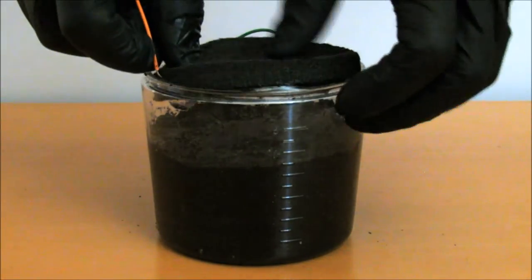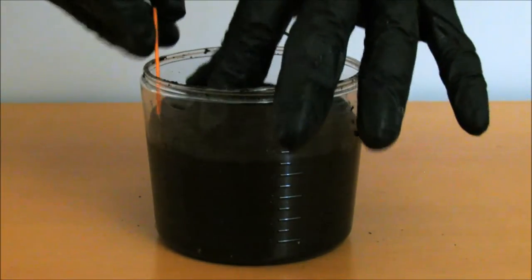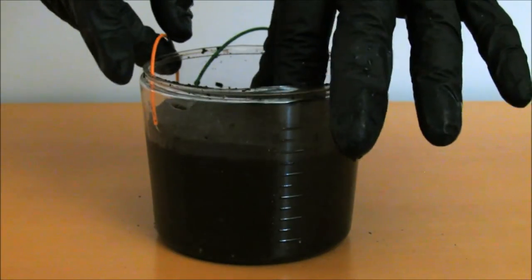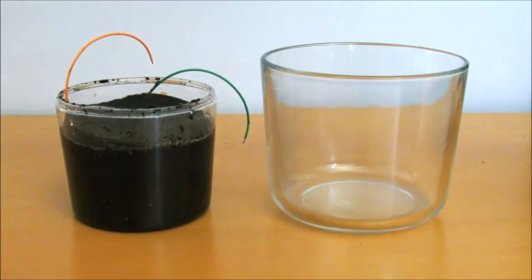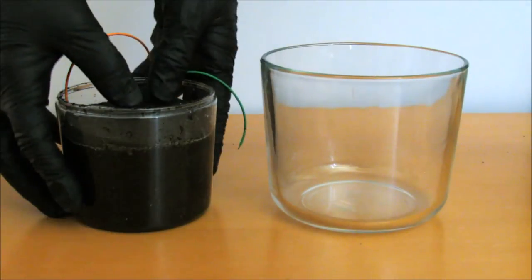Place the cathode gently on top of the mud. Make sure that there is no mud on top of the cathode. Let your MudWatt rest for a few minutes and drain any excess liquid.